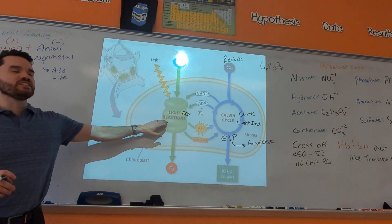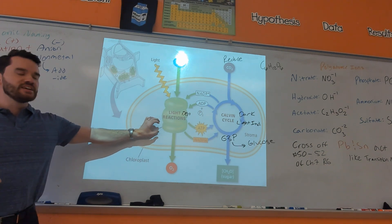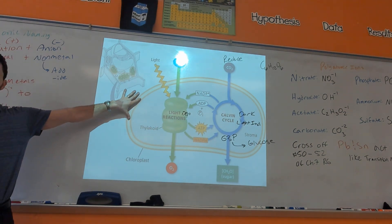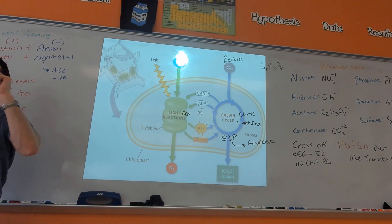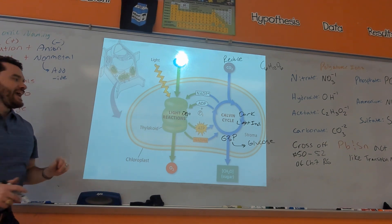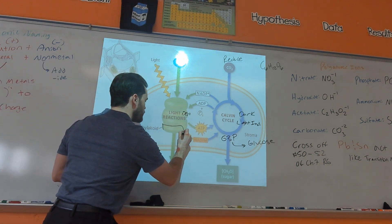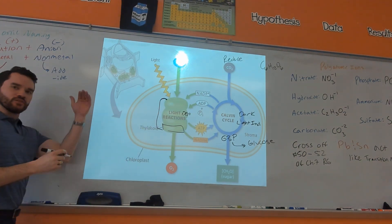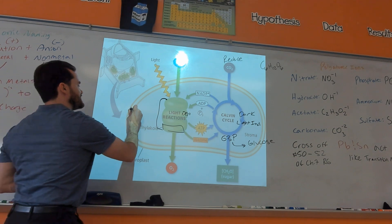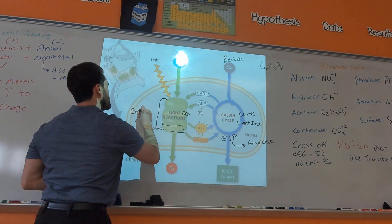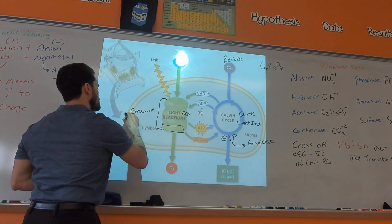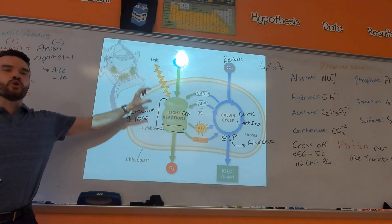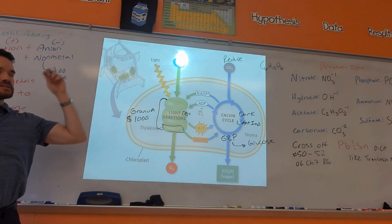The location of the light reactions is in the thylakoids. The thylakoids are inside the chloroplast — think of them like poker chips. An individual thylakoid is like one poker chip, and then the entire stack of thylakoids — the stack of poker chips — is called a granum. Think of 'granum' like a thousand grand — that's the whole big stack.